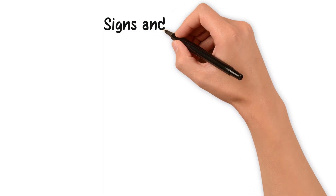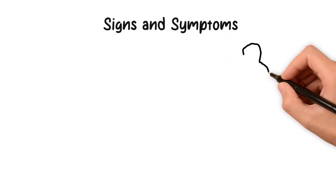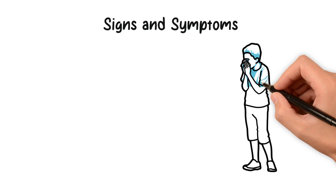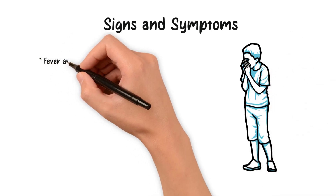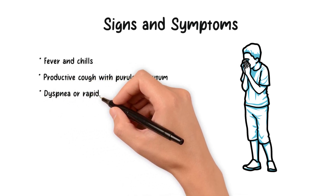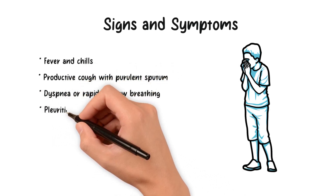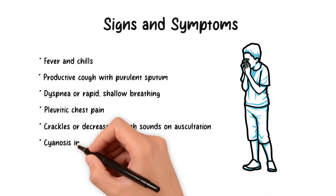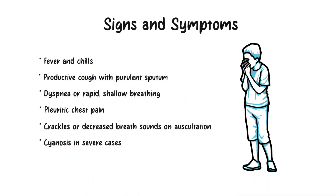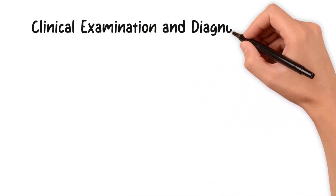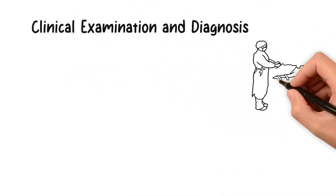Recognizing the signs and symptoms of pneumonia is crucial for early diagnosis and prompt treatment. Common clinical features include fever and chills, productive cough with purulent sputum, dyspnea or rapid and shallow breathing, pleuritic chest pain, crackles or decreased breath sounds on auscultation, and cyanosis in severe cases.